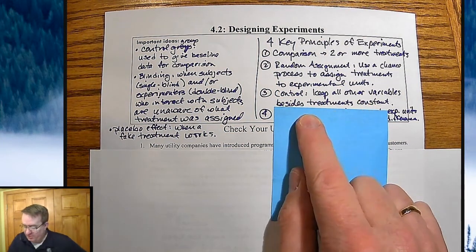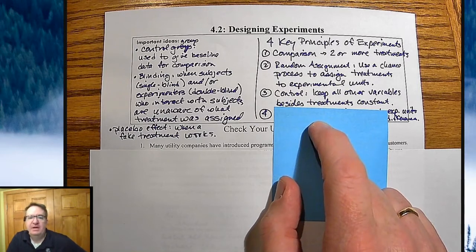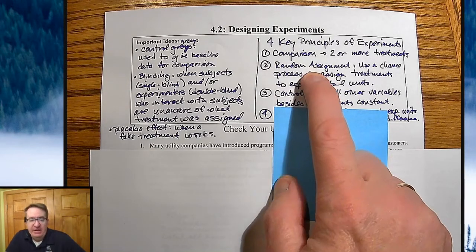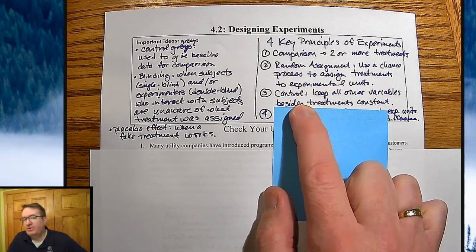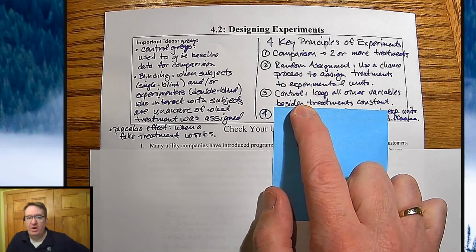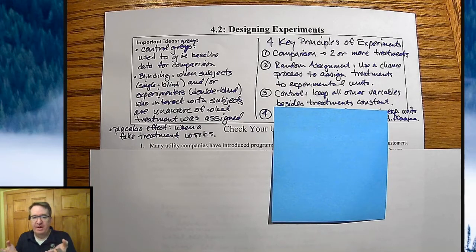So comparison, random assignment, third, control group. We already kind of talked about that. What the control group does is it keeps all other variables besides the treatments constant. Since you're randomly assigning everybody, you have a fairly likely chance, and we're going to talk more about this as we go along in the course, that if somebody has high blood pressure in the control group, they probably will have somebody with high blood pressure in the experimental group, and so everything there kind of balances out.